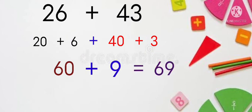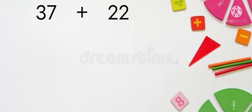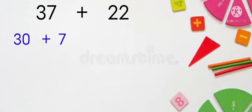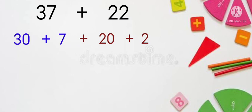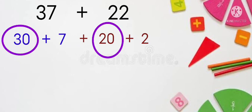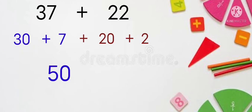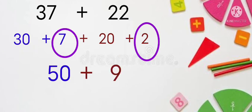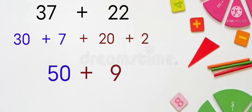In the same way, let's find the answer for 37 plus 22. Let's split 37, 30 plus 7, then 22, 20 plus 2. Now add 30 and 20, 50, that will give you 50. Now add 7 plus 2, it's 9. So 50 plus 9 is equal to 59. Do you all understand? Can you do this by yourself?